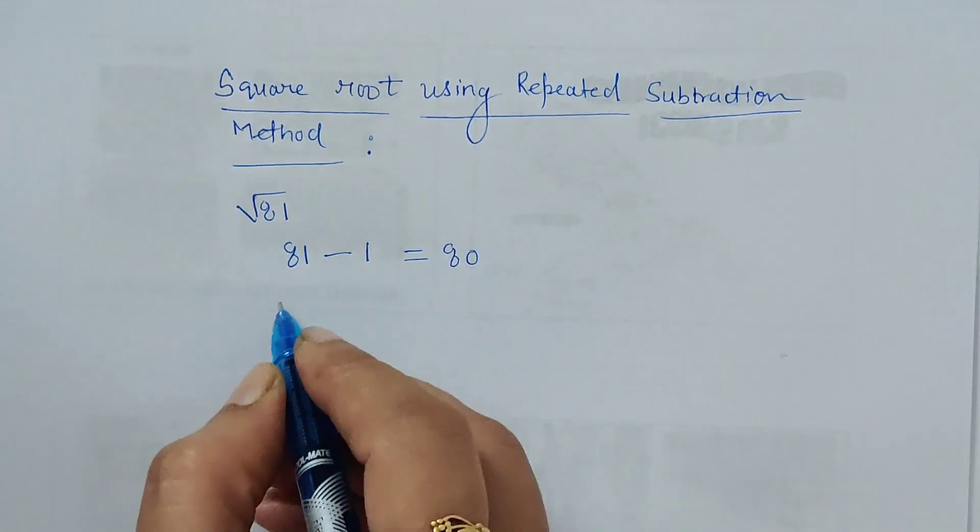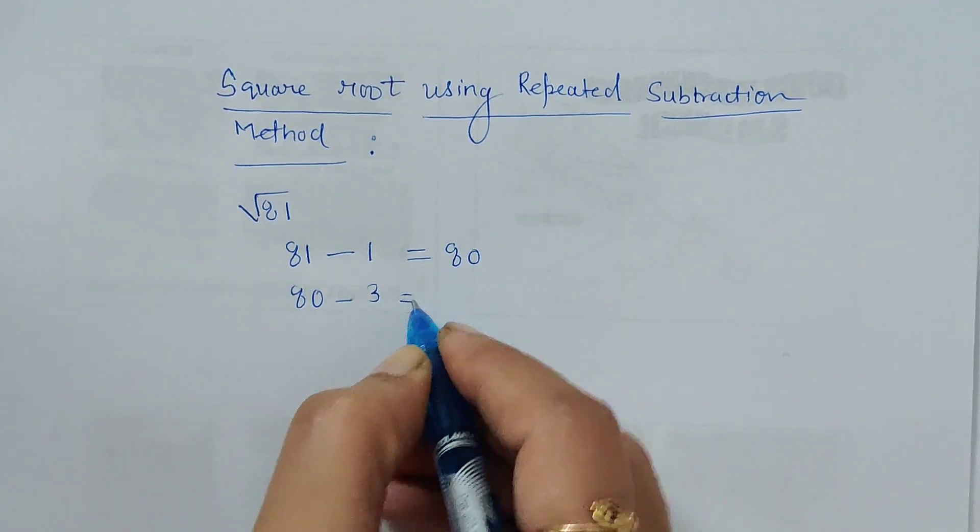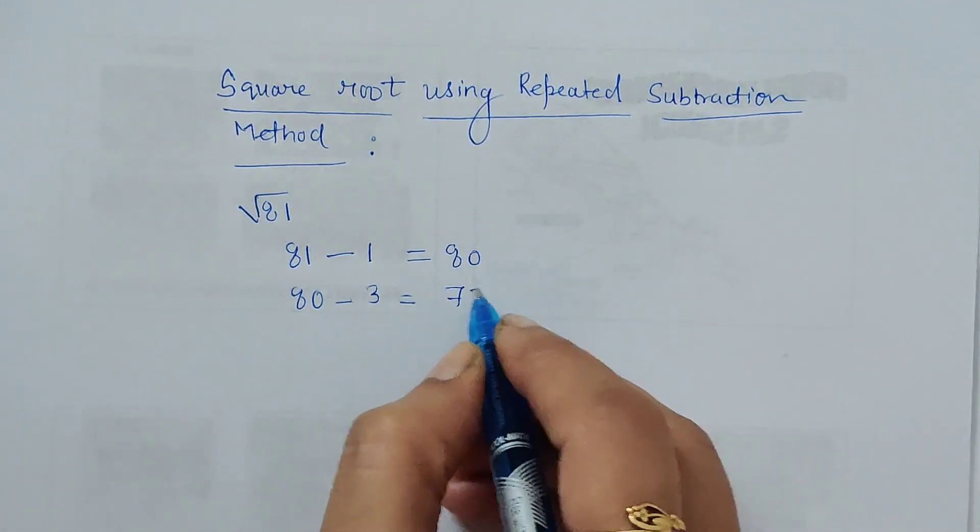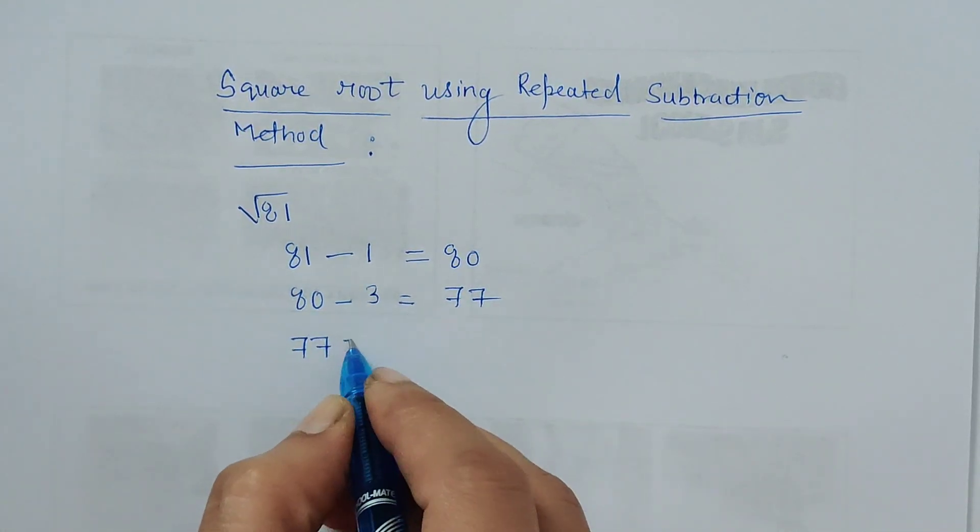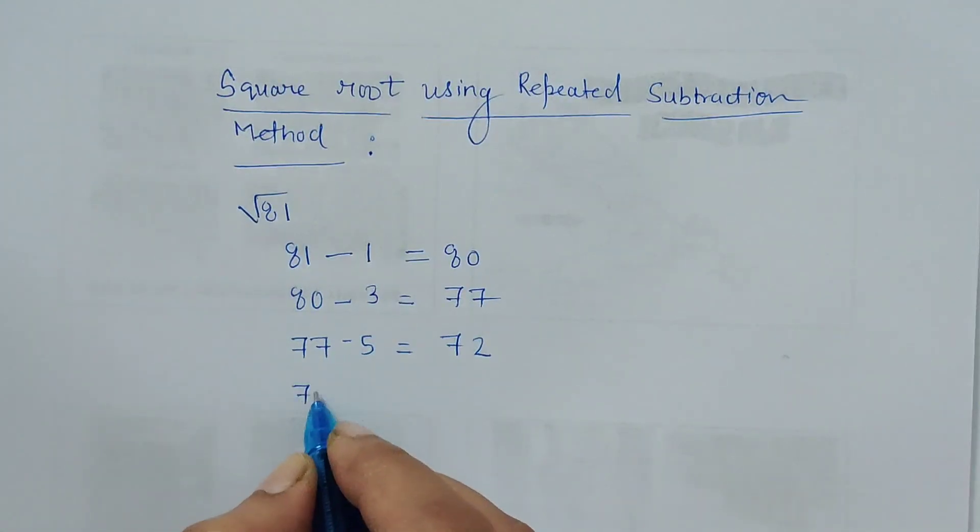Now write 80 here. What is the next odd number? 3. 80 minus 3 is 77. Now write 77 here. What is the next odd number? It is 5, so 77 minus 5 is 72. Now write 72 here.